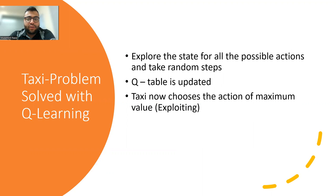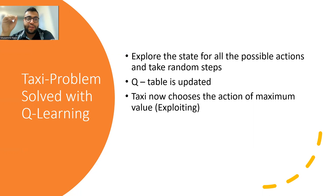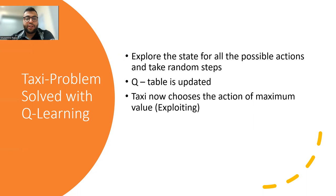So how is the taxi problem solved using Q-learning? In Q-learning, there's a Q-table that we follow. What happens is the agent explores all the possible actions and takes random steps — this happens when the agent is learning. When an agent enters an environment, it explores all the possible actions and takes a random step. Based on that action, it receives a reward or a penalty, which gets updated into the Q-table. Once the Q-table is populated, the agent starts to follow those actions that have the maximum value, which is done through exploiting.